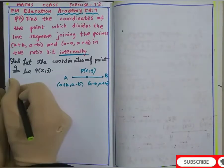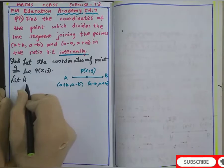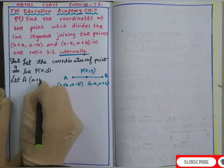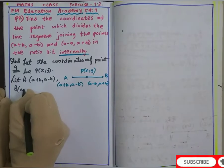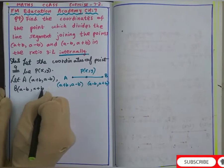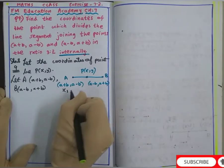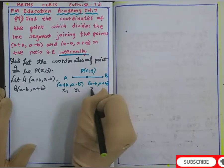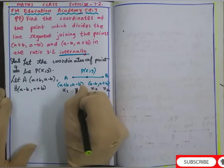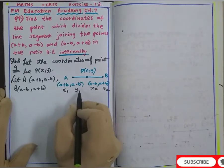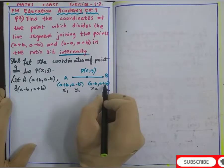Let A be (a+b, a-b) and B be (a-b, a+b). Let this be x1 coordinate and y1 coordinate. This is x2 coordinate and y2 coordinate. The first point is x1y1 and the second point is x2y2.